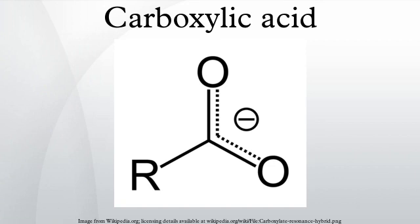Carboxylic acids are readily identified as such by infrared spectroscopy. They exhibit a sharp band associated with vibration of the C=O bond between 1680 and 1725 cm⁻¹. A characteristic O-H band appears as a broad peak in the 2500–3000 cm⁻¹ region. By NMR spectrometry, the hydroxyl hydrogen appears in the 10–13 ppm region, although it is often either broadened or not observed owing to exchange with traces of water.